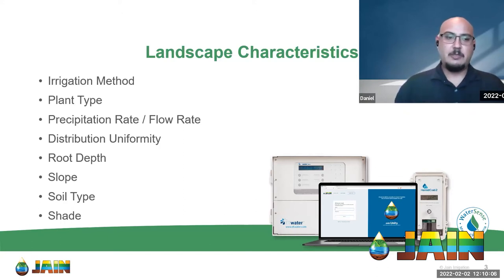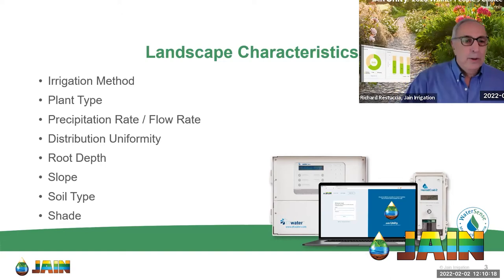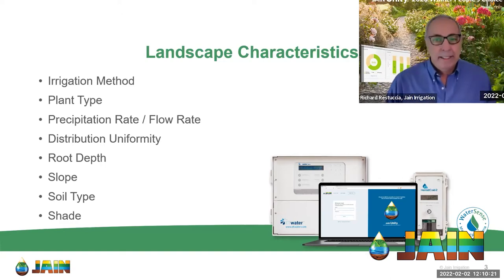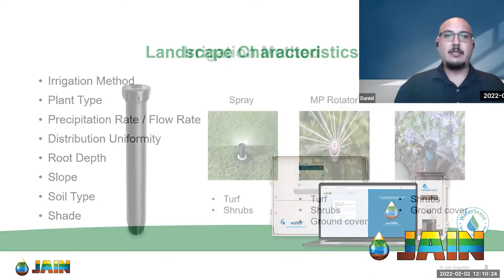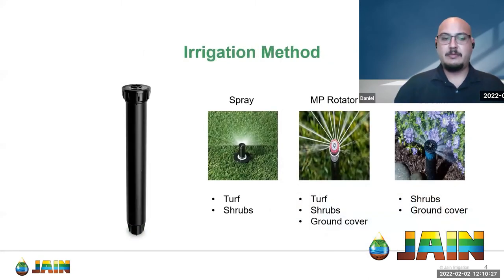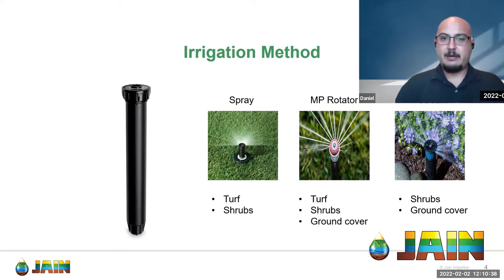Slope and soil type are key factors to determine how fast we can put water down, and shade factor affects how fast water evaporates. We'll touch on each of these characteristics and identify things to look out for when inspecting a site and understanding how they affect your watering schedule. For example, on irrigation method — on the left we have a spray head pop-up, pretty commonly used in turf or planters.